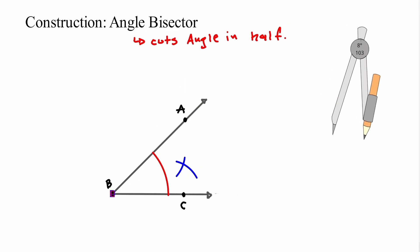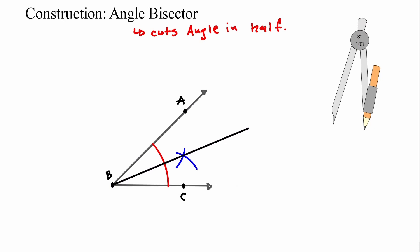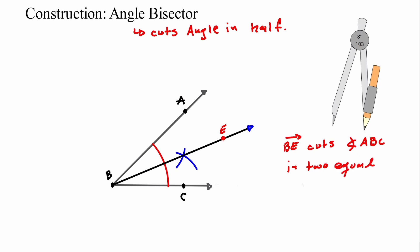Because if we connect the vertex to the intersection, this ray — let's call it ray BE — cuts angle ABC in two equal parts.